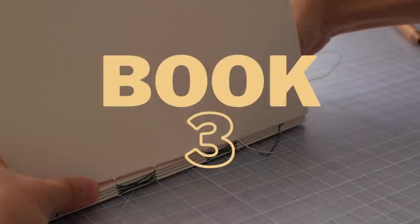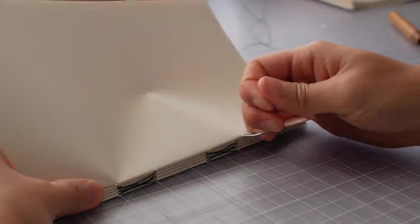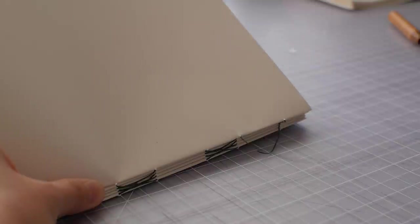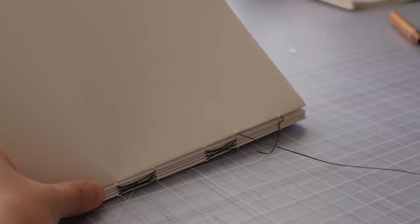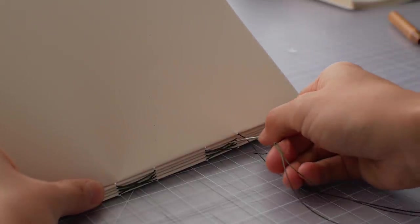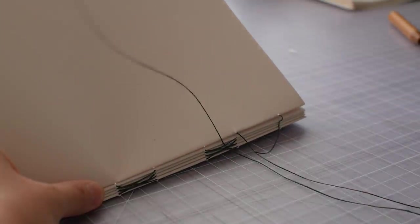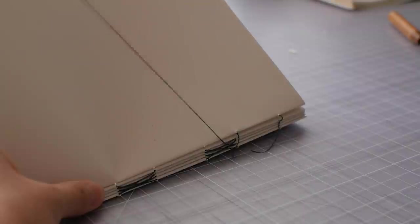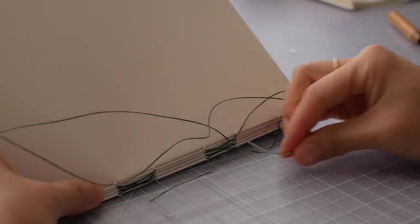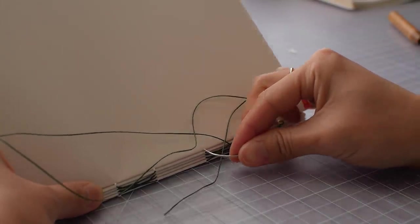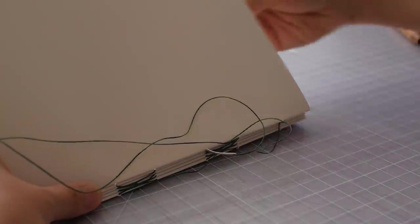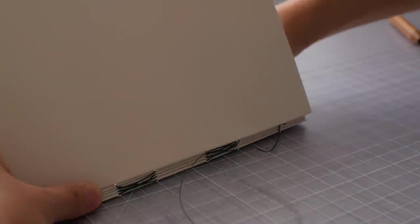For my third book I'm using the French link stitch again and this is going to be a soft cover journal. The paper is a 24 pound, 90 gsm writing paper. My original idea was to make a naked coverless book but I opted for fabric covers and an exposed spine.